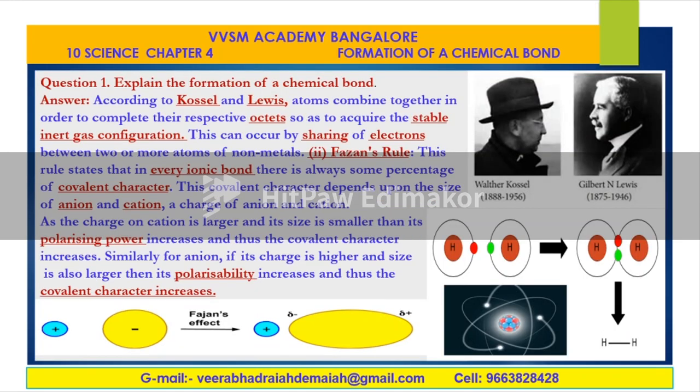According to Kossel and Lewis, two great scientists — Walther Kossel (1888–1956) and Gilbert N. Lewis (1875–1946) — these two scientists are responsible for the explanation of the formation of chemical bond. Fajan's rule is also important: in every ionic bond, there is always some percentage of covalent character.